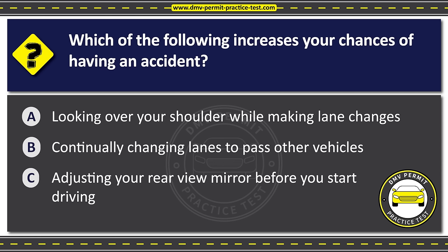Question forty-three. For which of the following traffic lights must you always stop your vehicle? Option A: Solid red lights, flashing red lights, and blacked out traffic signals. Option B: Solid red lights, red arrows, and flashing yellow lights. Option C: Solid red lights, flashing red lights, and yellow lights. The correct answer is Option A: Solid red lights, flashing red lights, and blacked out traffic signals.